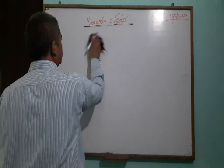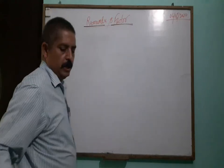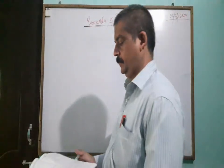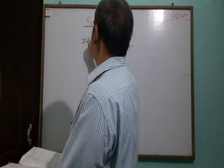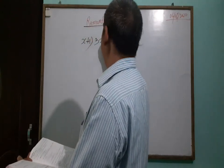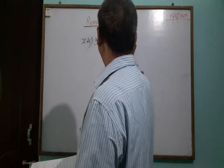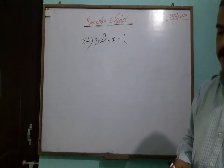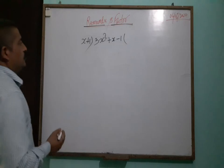But in expressions, we take any expression such as: x plus 1 divided into 3x squared plus x minus 1. So in these polynomials, how do we divide? First of all we check the signs and the numeric coefficients.